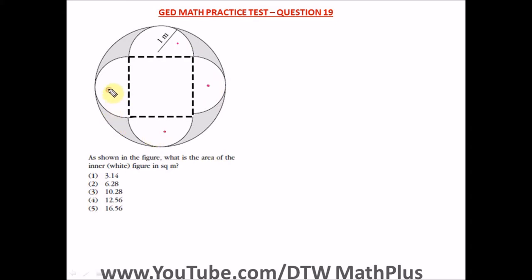Looking at the inner white figure, we can see there is a semicircle here, and this semicircle is the same as this one, the same as this one, and the same as this one. We have a square here. The radius of each semicircle is one meter — any point from the circumference to the center is the radius. So from here to here is one meter, which means one side of the square is also one meter.